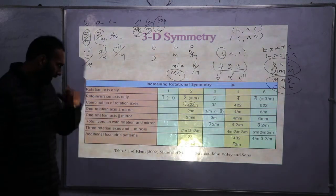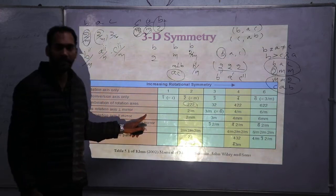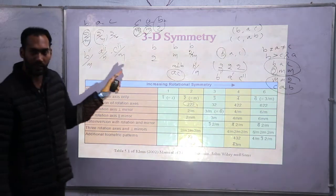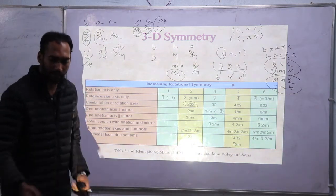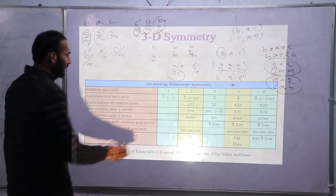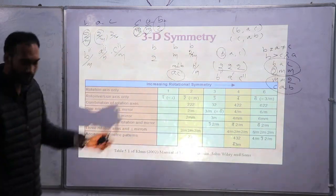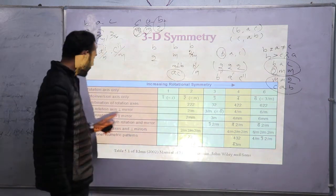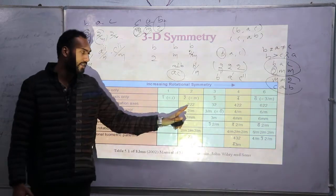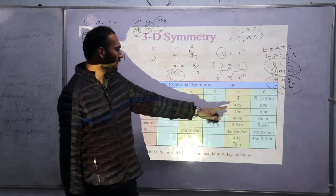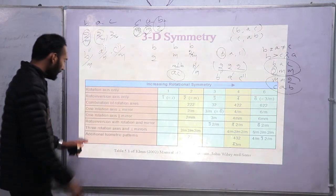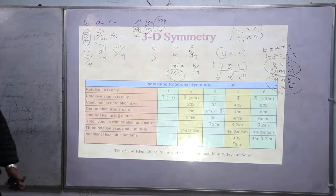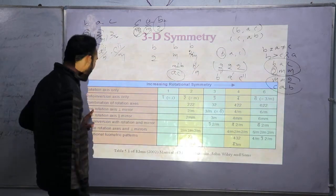Continuing from the last session, coming back to this table. M means perpendicular — I will prove that in the 32 class lecture. Looking at the table: the first category is only rotation axis, the second is only roto-inversion axis: 1-bar, 2-bar, 3-bar, 4-bar, 6-bar. Then combinations of rotation axes: 2 2 2, 3 2, 4 2 2, 6 2 2, and so on.